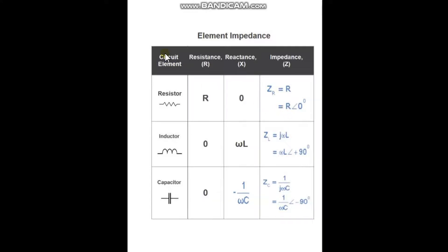For the circuit element of an inductor, reactance is equal to omega L, where omega is equal to two pi F. And for its impedance, we have J omega L in rectangular form, and in polar form we have omega L at an angle of positive 90 degrees.